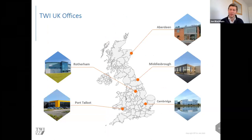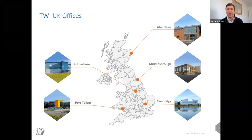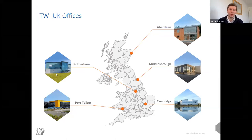We have five UK locations. Our headquarters is in Cambridge, and we have four regional centers across the UK. In Scotland, we have a training center in Aberdeen. In the northeast, in Middlesbrough, we have a center focused on non-metallics, arc welding and inspection, including a diving inspection tank for training purposes. In Rotherham on the Advanced Manufacturing Park, we have a center for additive manufacturing and friction stir welding. In South Wales at Port Talbot, we have an NDT center.